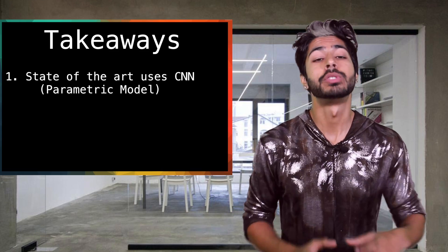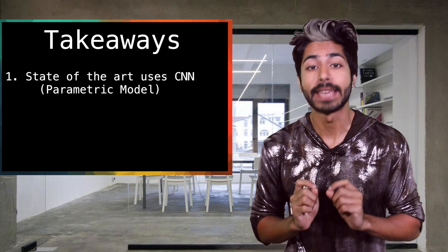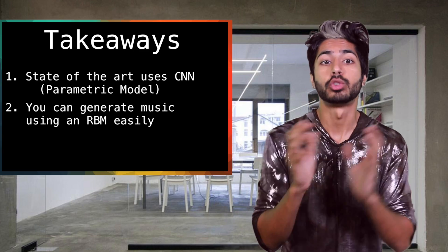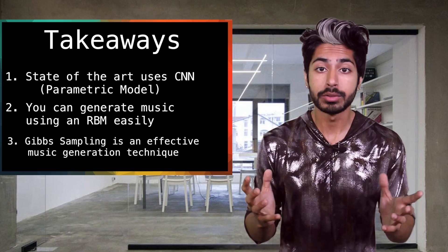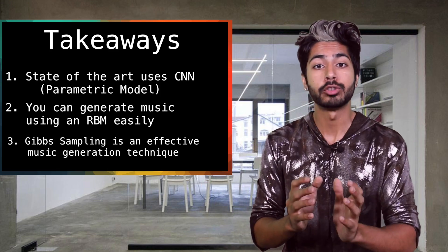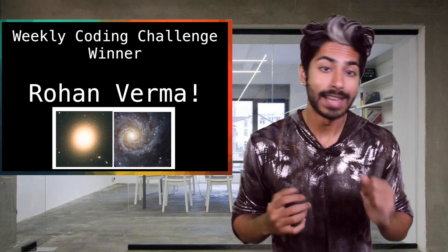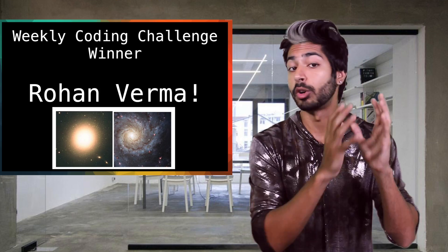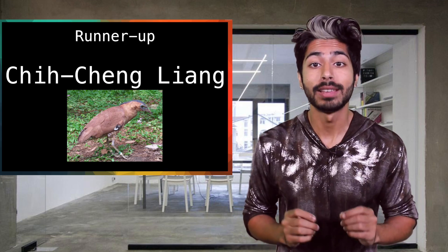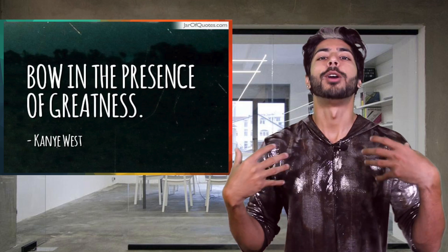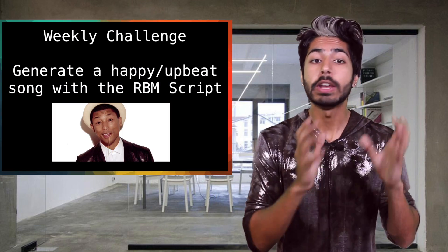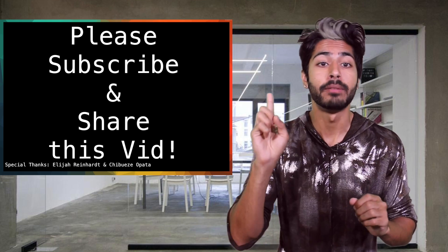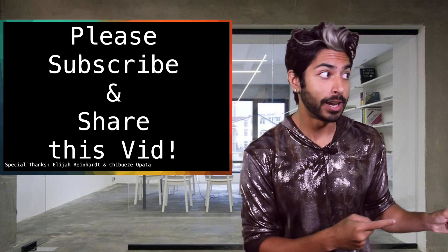The state of the art in music generation uses a CNN to generate raw waveforms parametrically instead of concatenatively. That algorithm requires lots of compute right now, so we can use an RBM to generate audio samples based on training data easily. Gibbs sampling helps us create audio samples during training by randomly obtaining them from a generated probability distribution based on the input data. The winner of the last coding challenge is Rohan Verma, who created an image classifier for astronomers to classify galaxies as either elliptical or spiral. The runner up is Qi Cheng Liang for creating a bird classifier for biologists. The challenge for this video is to use the RBM script to generate an audio sample with a happy upbeat sound. Post your code in the comments and I'll announce the winner in my video one week from now. Thanks for watching.